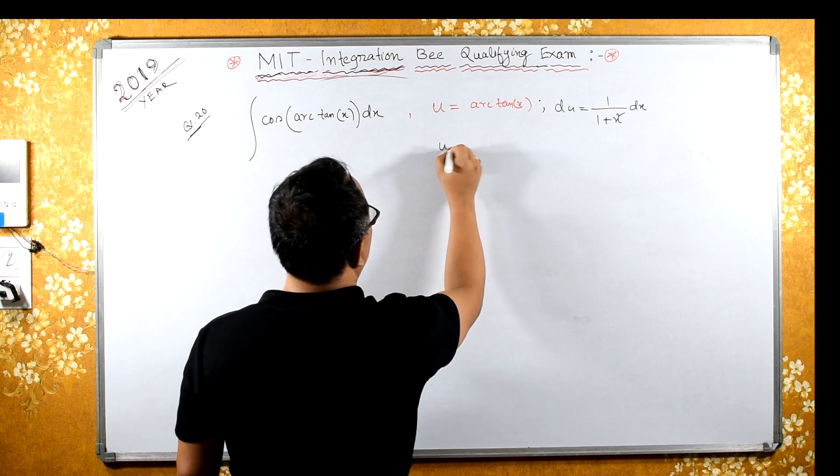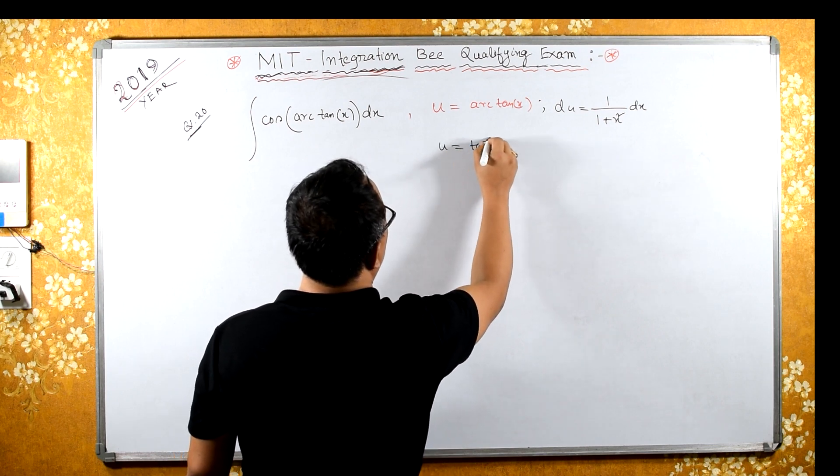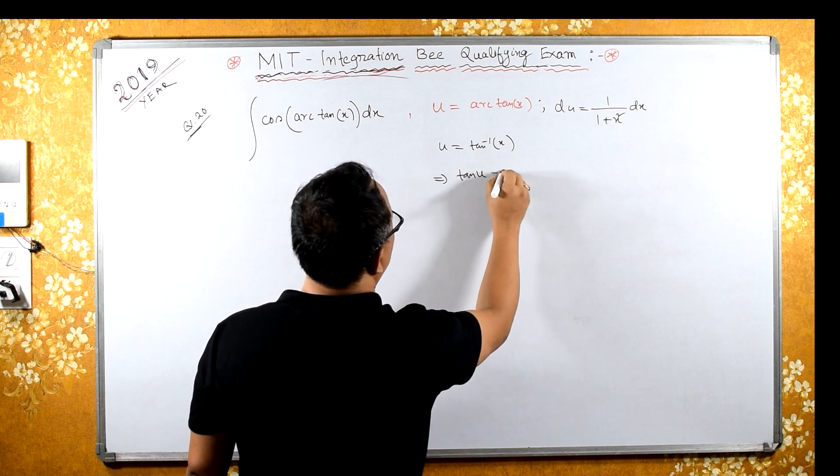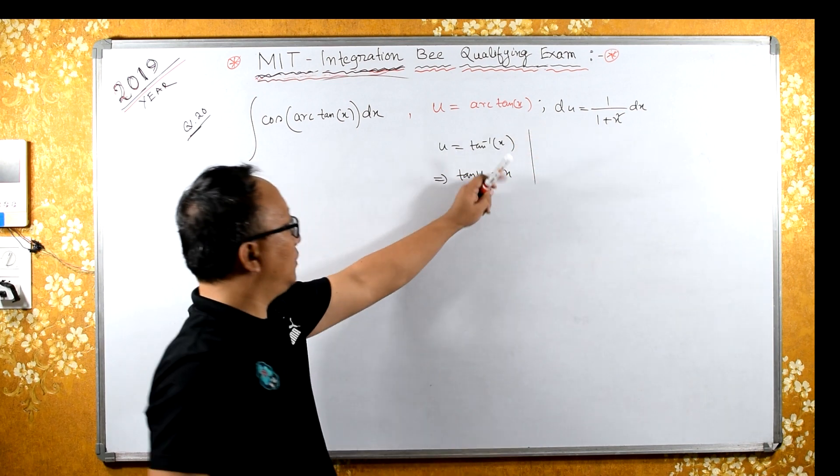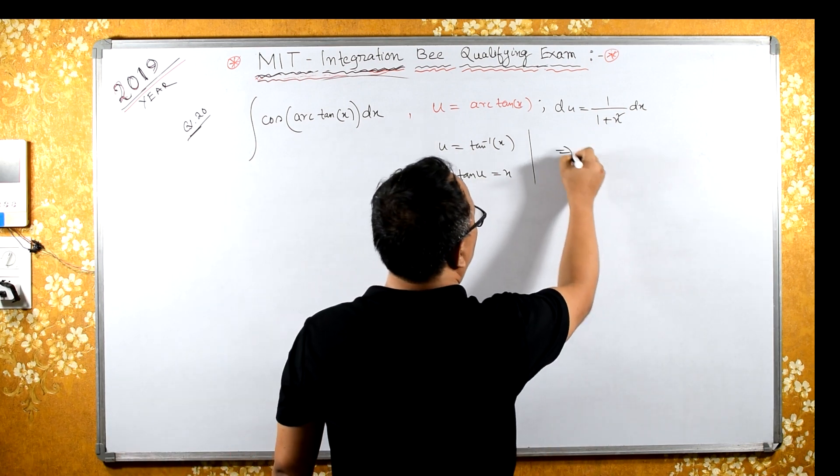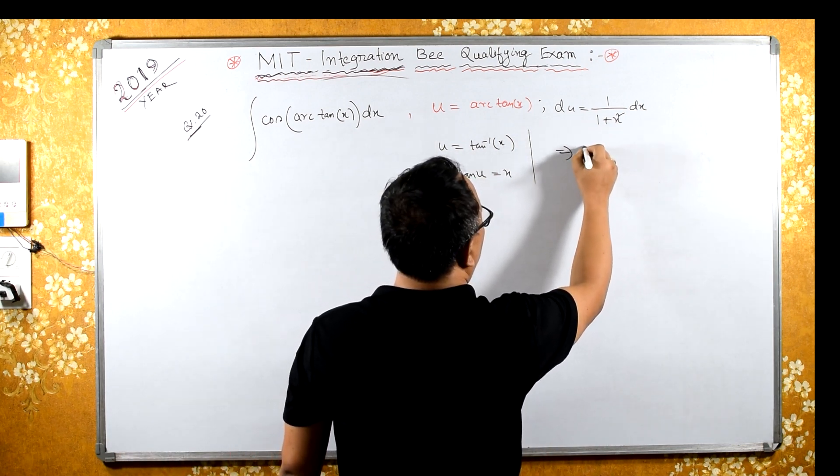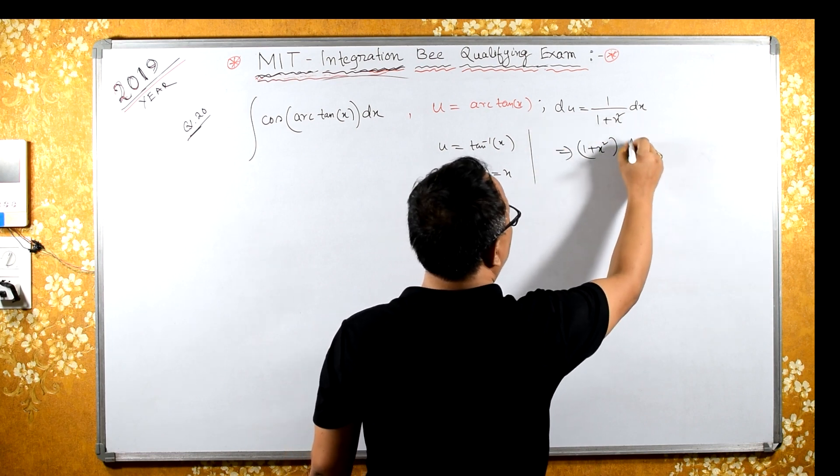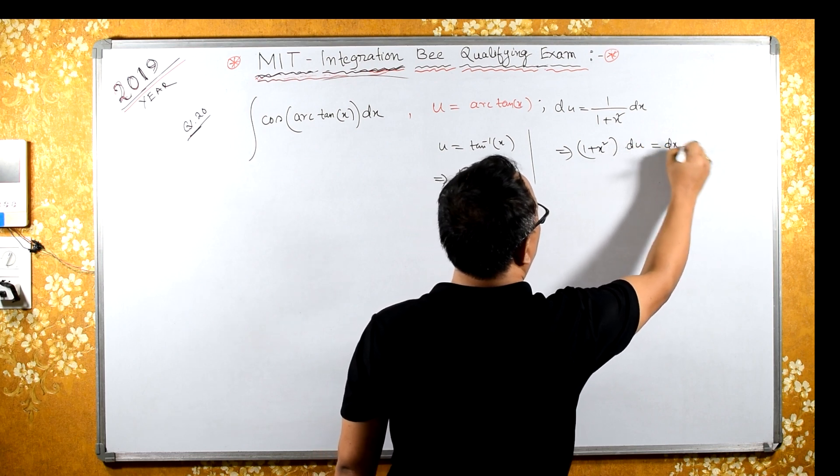Or you can say u equals to tan inverse x implies tan of u equals to x. From here we can conclude that 1 plus x squared times du equals to dx.